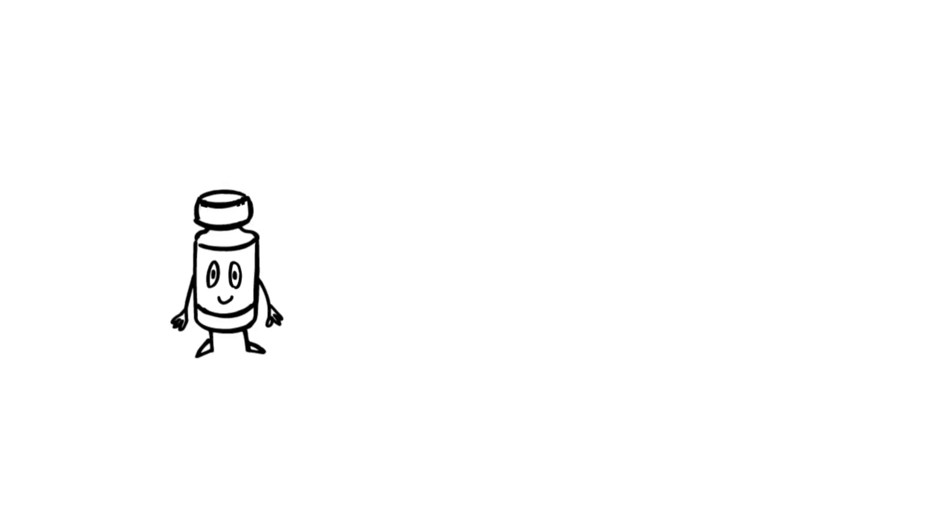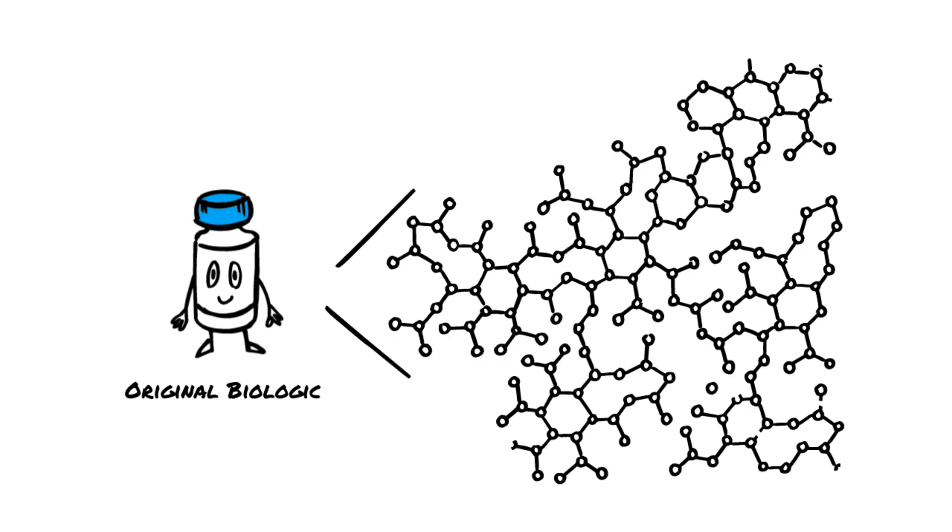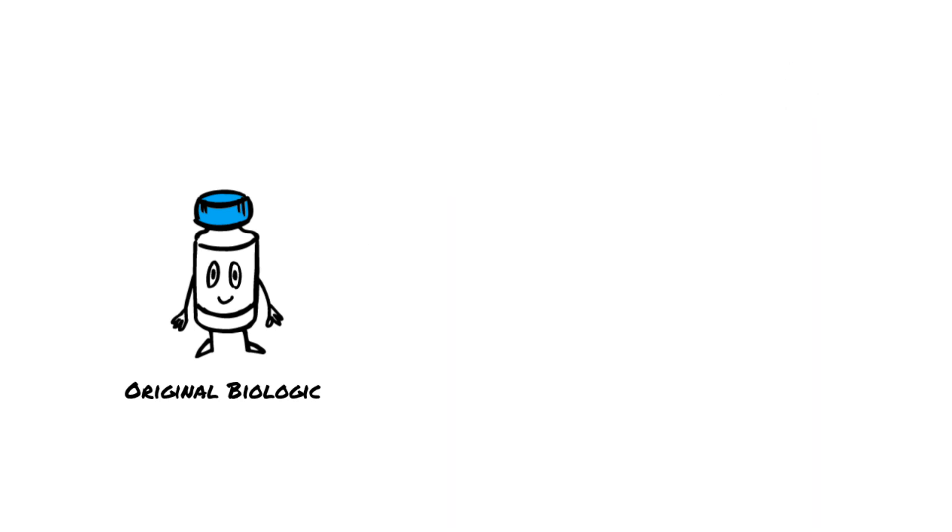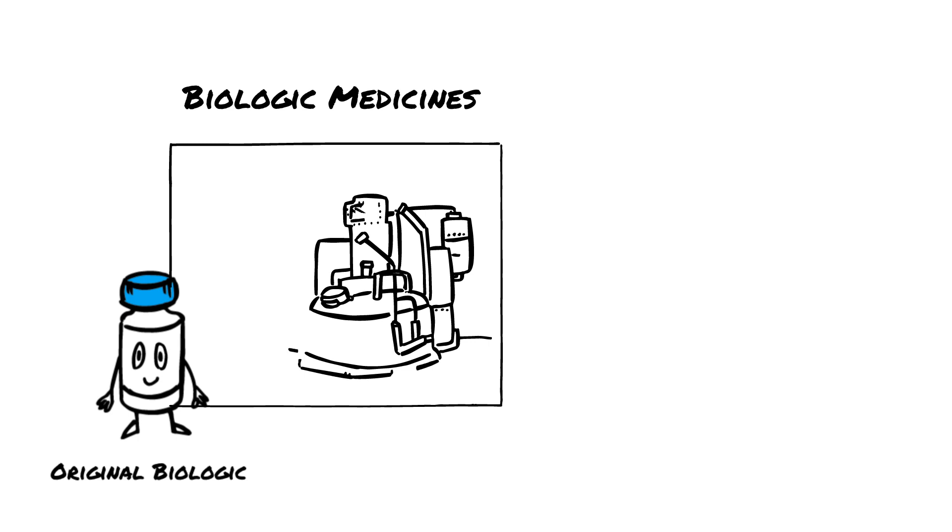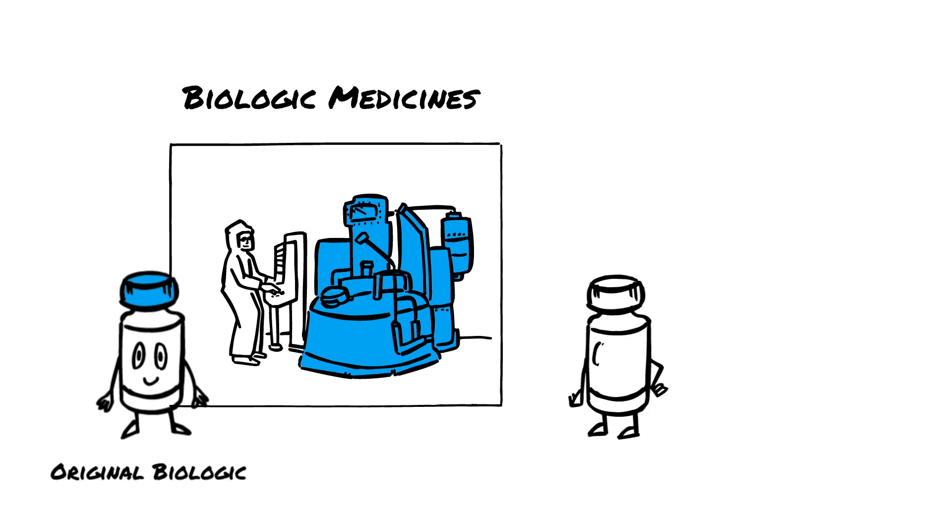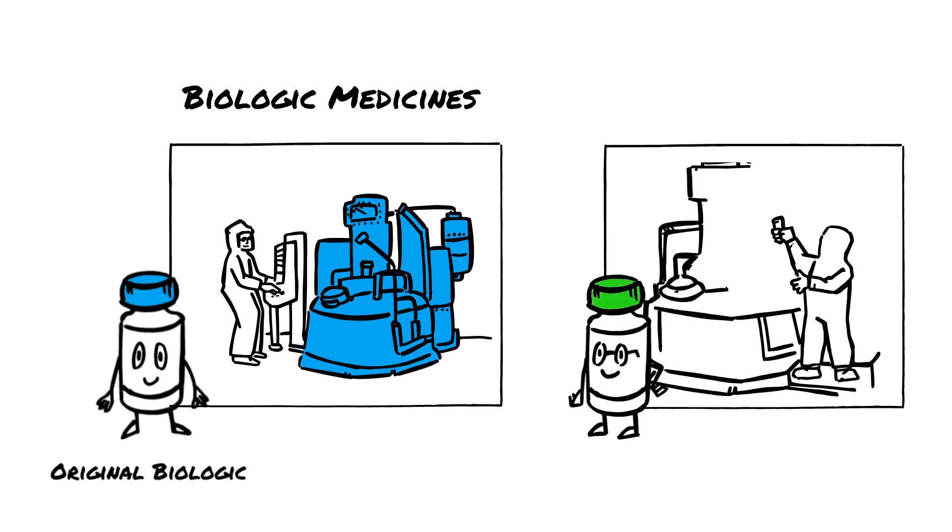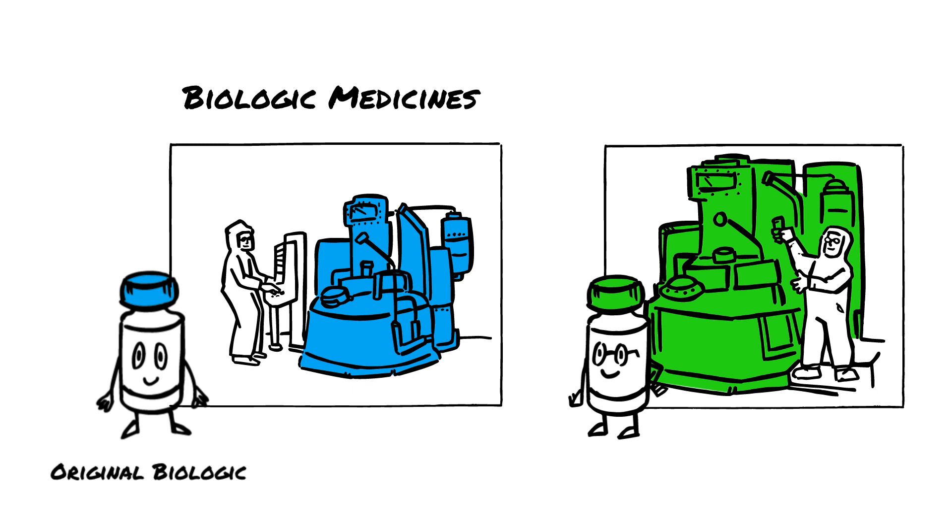Biologic medicines are different. They are large molecules made from living cells, manufactured through complex proprietary processes that cannot be copied exactly. When an innovator biologic patent expires, other companies can make similar copies called biosimilars.